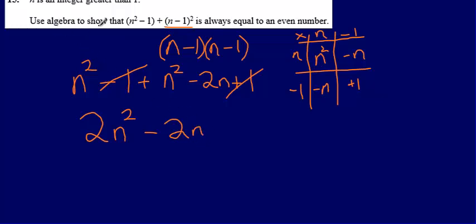To show this is always equal to an even number, I can say that if I'm multiplying any number by 2, that gives me an even number.